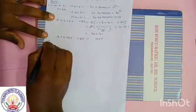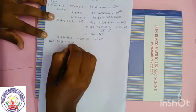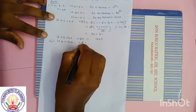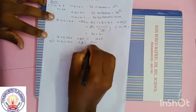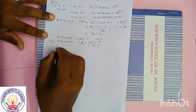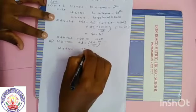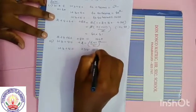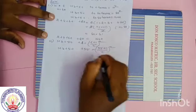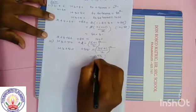Third question, subdivision number 3. 1 plus 3 plus 5 plus dot dot dot plus L. L is given. The formula is (L plus 1) by 2, the whole square. L means the last term. Our question is: 1 plus 3 plus 5 plus dot dot dot plus 55. Here L is equal to 55. So (55 plus 1) by 2, the whole square, which equals 56 by 2, the whole square.